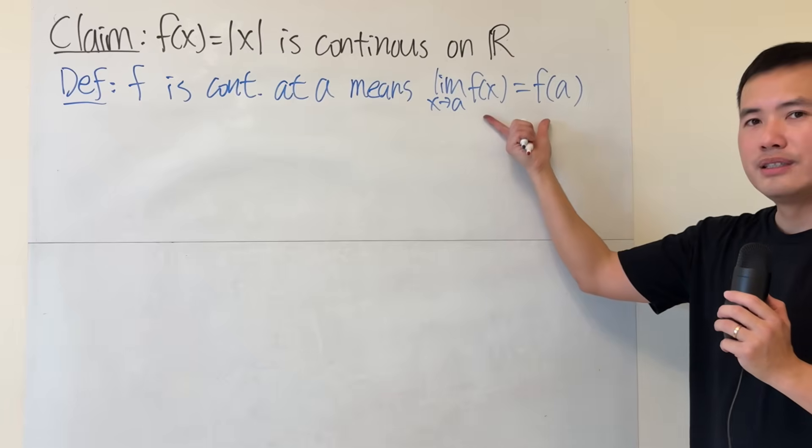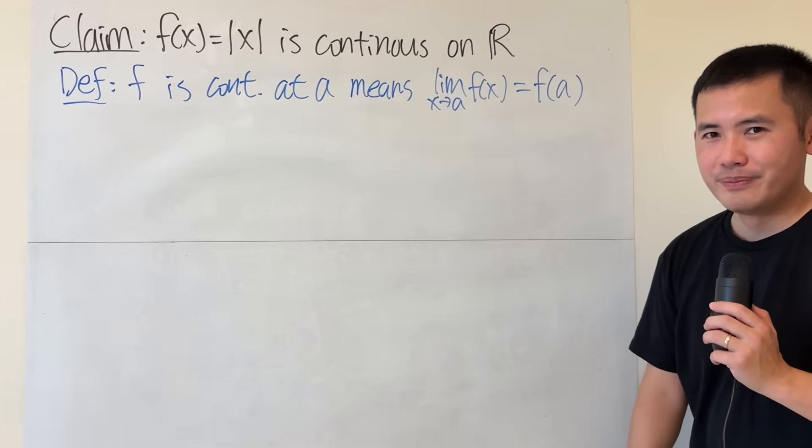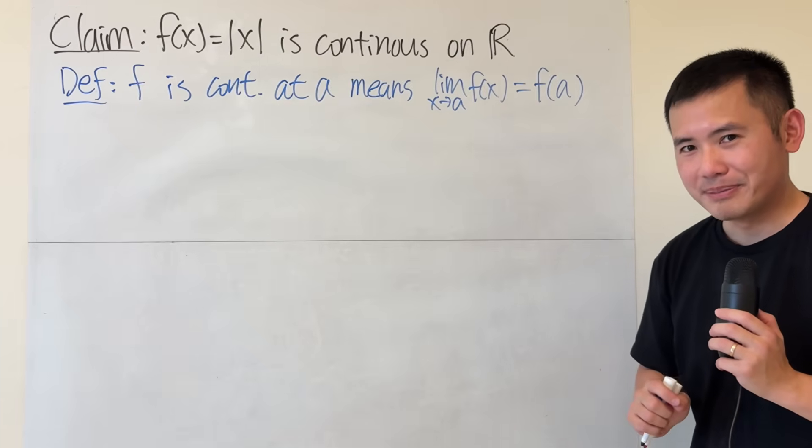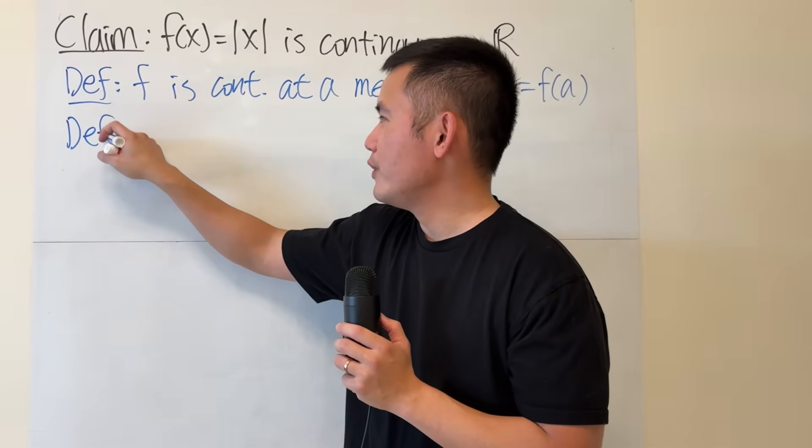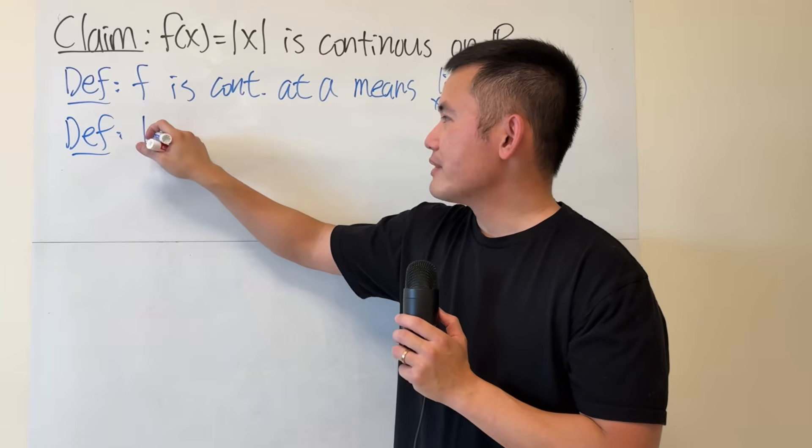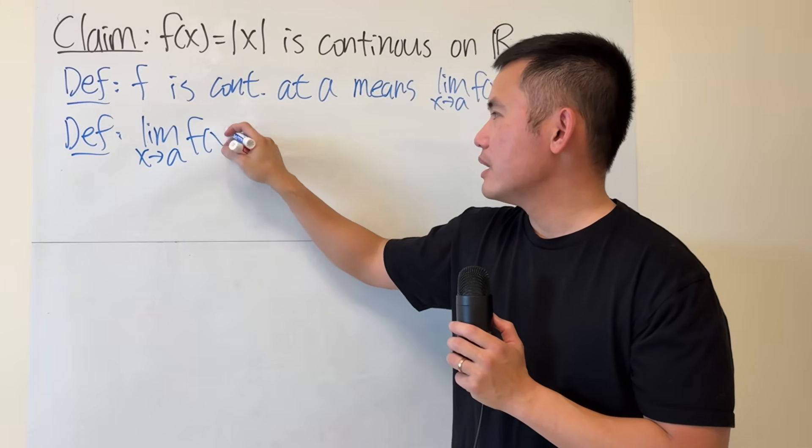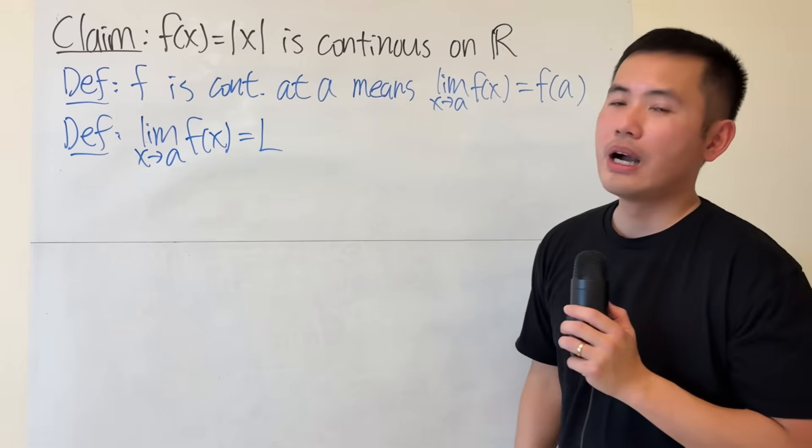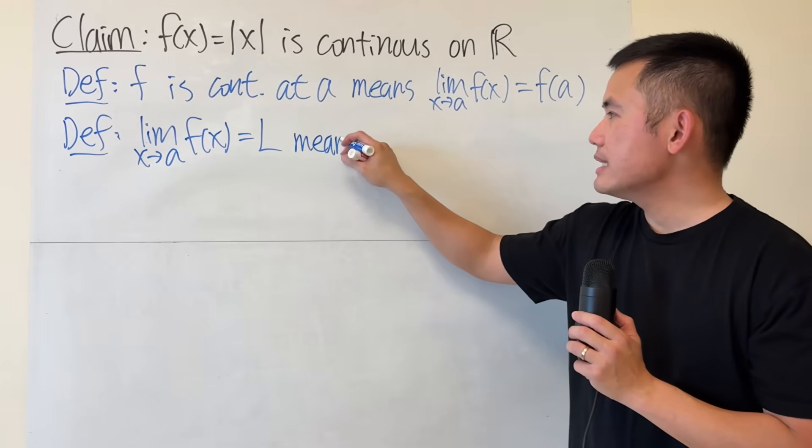But now, what's this? This is the limit. And how do we show a limit is true? We will have to use the epsilon-delta definition. So here's another definition that I would like to review with you guys. If we have the limit as x approaching some number a of a function, let's say this right here is equal to some number L.